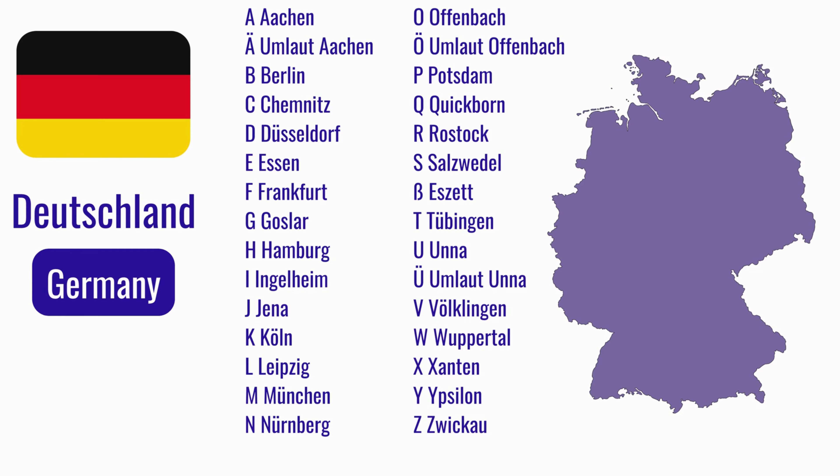N wie Nürnberg. O wie Offenbach. Ö wie Umlaut Offenbach. P wie Potsdam. Q wie Quickborn. R wie Rostock. S wie Salzwedel. Scharfes S wie SZ. T wie Tübingen. U wie Unna. Ü wie Umlaut Unna. V wie Völklingen. W wie Wuppertal. X wie Xanten. Z wie Zwickau.